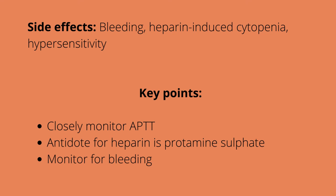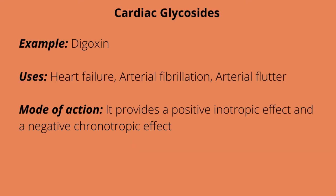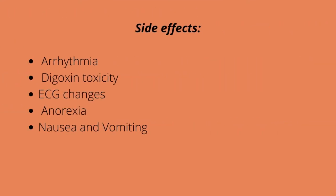Now let's finish with cardiac glycosides. An example is digoxin. Digoxin is used for various conditions like supraventricular tachycardia, heart failure, atrial fibrillation, and atrial flutter. Its mode of action: it provides a positive inotropic effect, which increases the force of myocardial contraction. Positive inotropic means increased cardiac contractility. Digoxin is both a positive inotrope and a negative chronotrope — negative chronotrope means it slows the heart rate. Side effects include arrhythmias like bradycardia, digoxin toxicity, EKG changes, anorexia, as well as nausea and vomiting. Here, anorexia refers to lack of appetite.